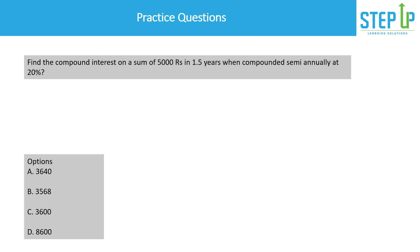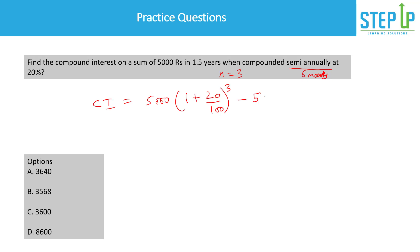Let's take an example for compound interest. Find the compound interest on a sum of five thousand rupees in 1.5 years when compounded semi-annually. Semi-annually means every six months, so 1.5 years gives three cycles, meaning n equals three. The formula gives CI = 5000 × (1 + 20/100)^3 − 5000.